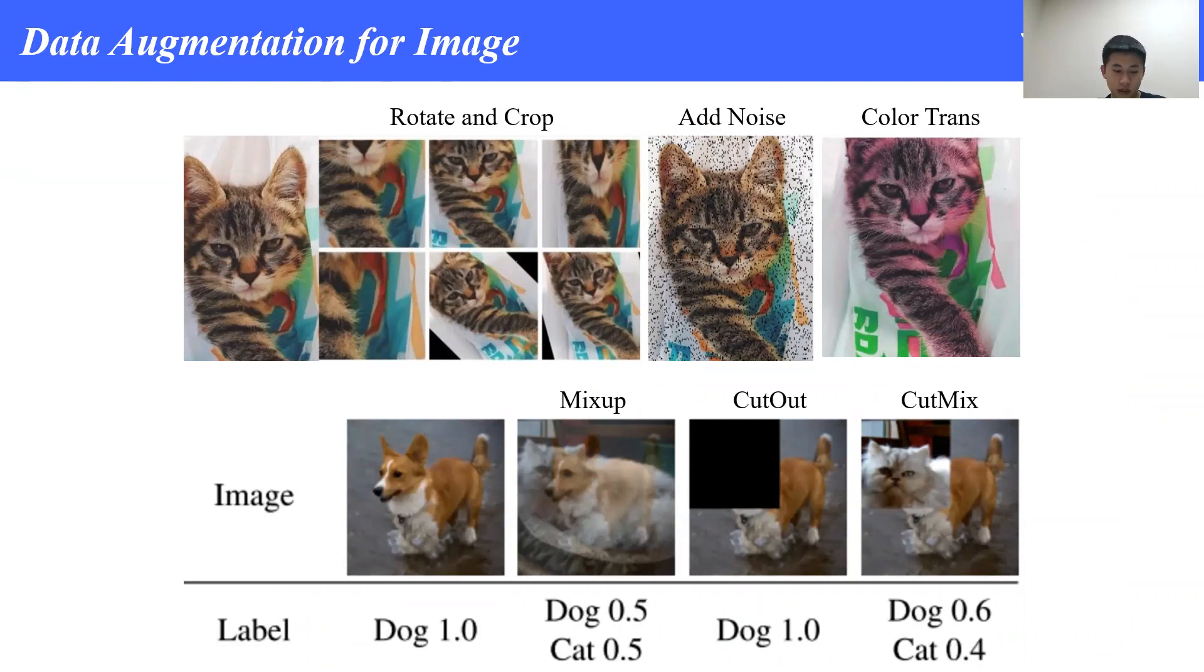The first row is augmentation for a single sample, including rotate, crop, add noise, and color transfer. With these operations, the label of the image remains unchanged. The second row is augmentation for a pair of samples. Mixup directly deals with two whole images, while CutMix cuts out part of one image and then mixes with another. Naturally, a fusion of labels is required now. For GNNs, augmentation for a single sample is easy to apply, but methods in the second row are not yet widely studied. We focus on mixup in our work and do some attempts to augment graph data.